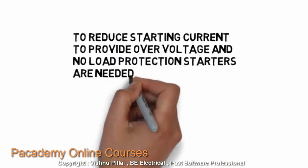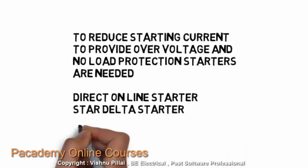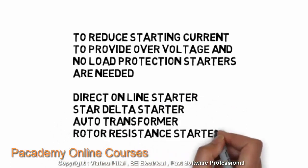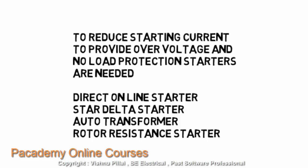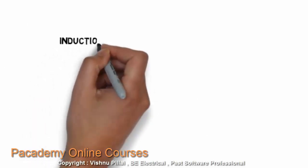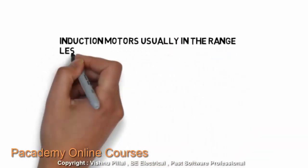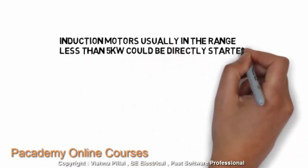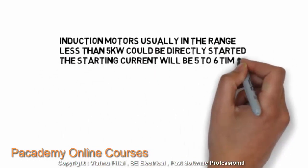To reduce the starting current and to provide over-voltage and no-voltage protection, starters are needed. The different kinds of starters available for the induction motor include: a direct online starter, which connects the motor directly to the supply without any other arrangement; a star-delta starter, which connects the motor in star during starting and delta while running; an auto-transformer to supply reduced voltage at starting; and resistance added to the circuit at the time of starting.